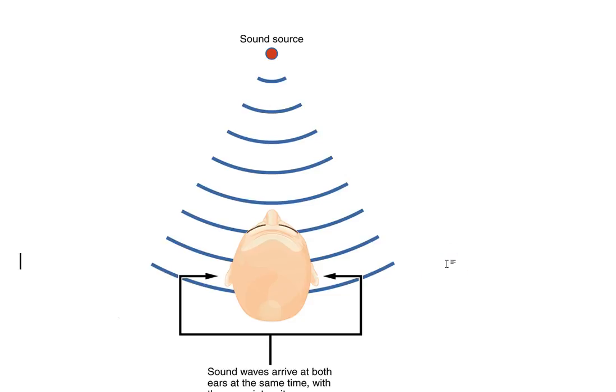In this lesson, we're going to take a look at another example of how neurons, when they're arranged in certain ways, can do some useful computations. In this case, we'll look at how brains can determine the location of a sound in space.